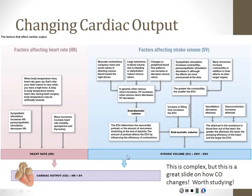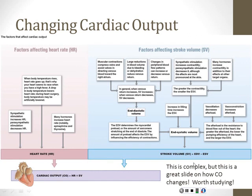Heart rate is the easy piece. What about stroke volume? The best way to look at stroke volume is to consider its two components: end diastolic volume (EDV) and end systolic volume (ESV). End diastolic volume is how full the heart is before it starts to contract. End systolic volume is how empty the heart gets at the end of a contraction — how much blood is left in it. Subtracting what's left at the end from the amount present when full gives us how much blood actually left the heart.